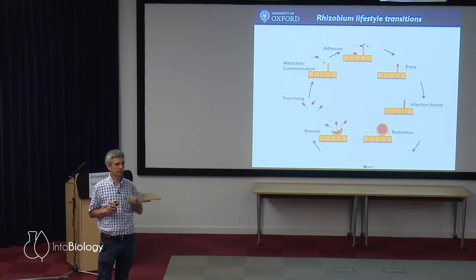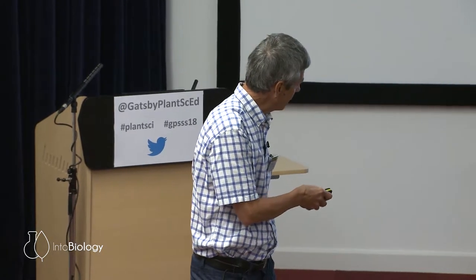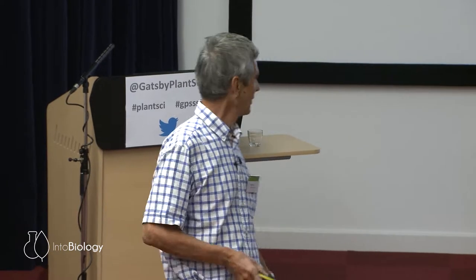The bacteria in the nodule are fixing nitrogen — taking N2 out of the air and turning it into ammonia, giving it to the plant. It's the ultimate symbiosis, because the plant gives the bacteria photosynthate: it photosynthesises, takes CO2, makes sucrose, and transports it down from the shoot to the nodule. The bacteria get a carbon source, and in return give the plant ammonia, which the plant turns into amino acids.